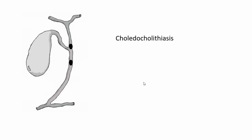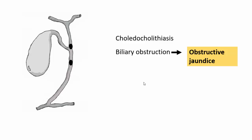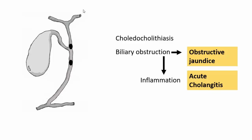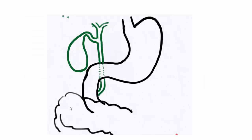If stones become dislodged into the common bile duct or common hepatic duct, this is referred to as choledocholithiasis. Obstruction leads to obstructive jaundice; inflammation of the biliary tree causes acute cholangitis. In rare cases, the inflammation may extend into the pancreatic duct, resulting in pancreatitis.